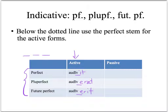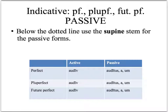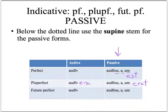However, when you get to the passive forms, you're going to start by writing the perfect passive participle. If I'm doing third person singular, the endings will be -us, -a, -um. Then add the helping verb. In the perfect passive, the helping verb is the present of 'sum'. In the pluperfect passive, it's the imperfect of 'sum'. The helping verb will match the ending in the active form — in the active form I had 'erit', so the helping verb over here is 'erit'.